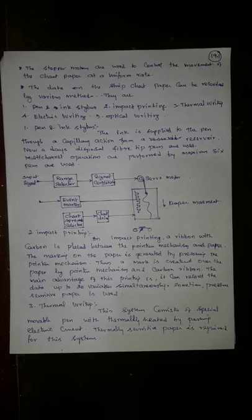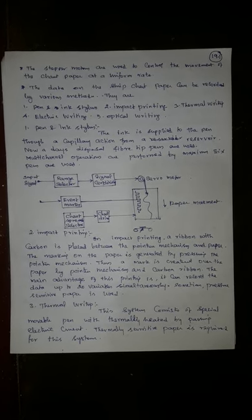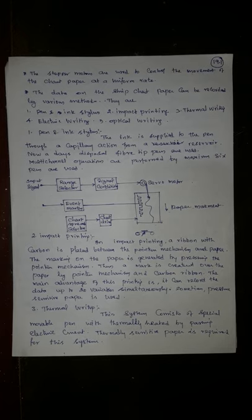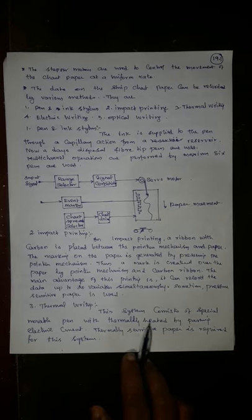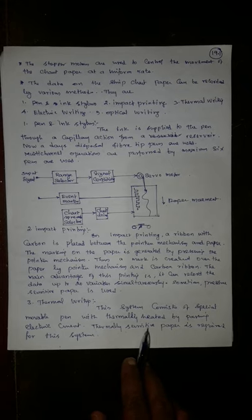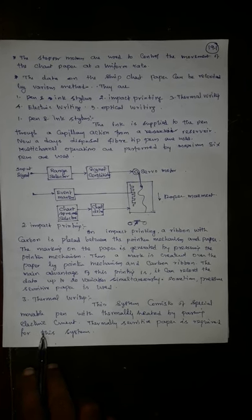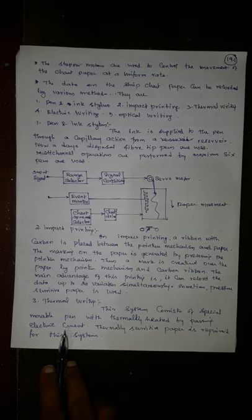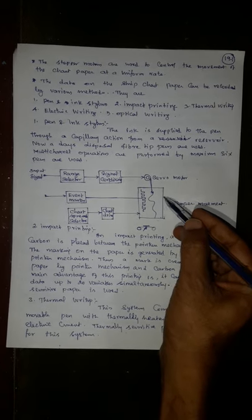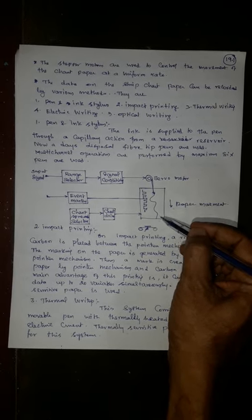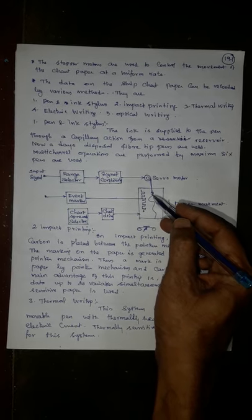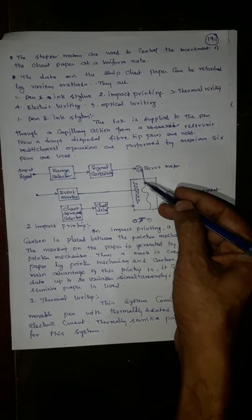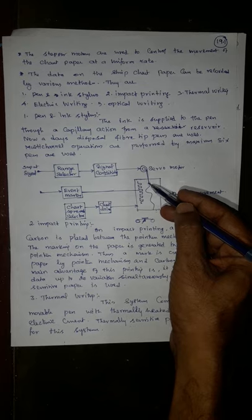Sometimes pressure sensitive paper is also used. Next one is thermal writing. Very simple. In thermal writing the paper is replaced by a thermal sensitive paper. This system consists of a special movable pin thermally heated by passing an electric current. Thermally sensitive paper is required for this system. Here a stylus or writing mechanism is thermally heated by passing electronic current and heat will be generated at this tip.